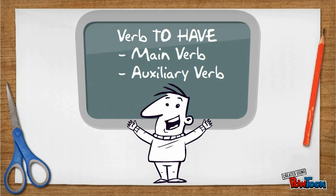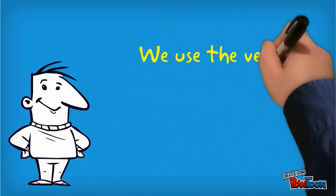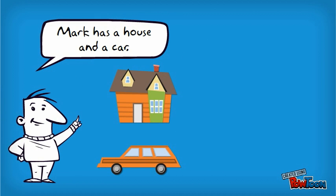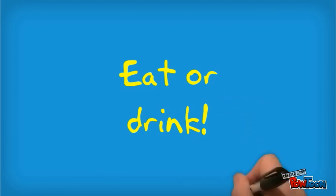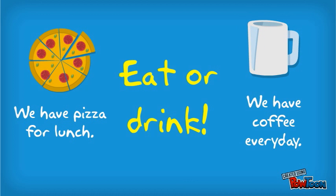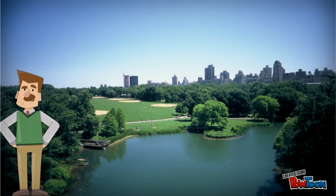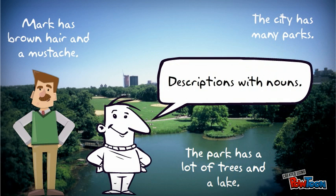The verb HAVE can also be a main verb and an auxiliary verb. Let's have a look at this verb as a main verb. We use the verb HAVE to indicate possession. It also means EAT or DRINK. You can use it with meals. Use the verb HAVE for descriptions with nouns.